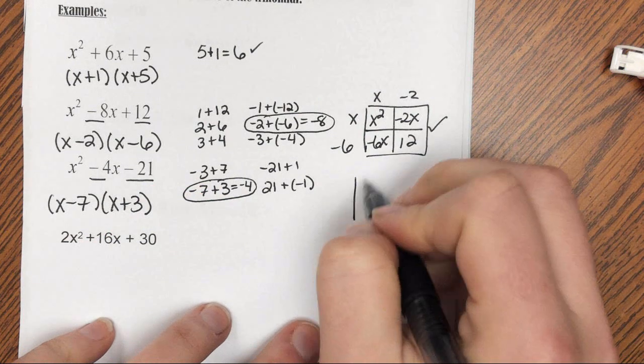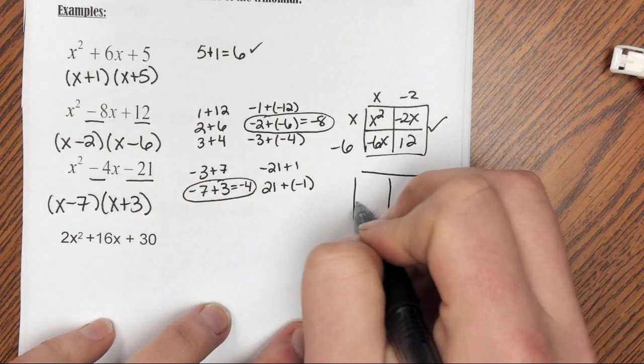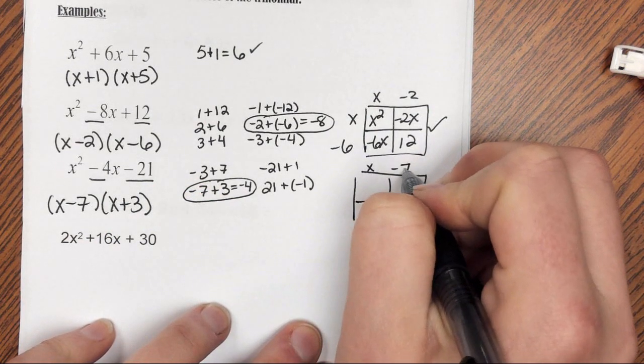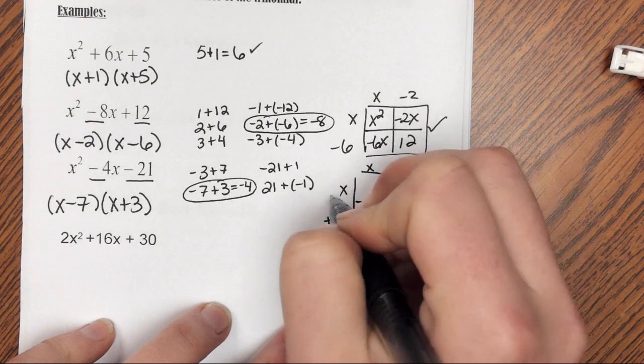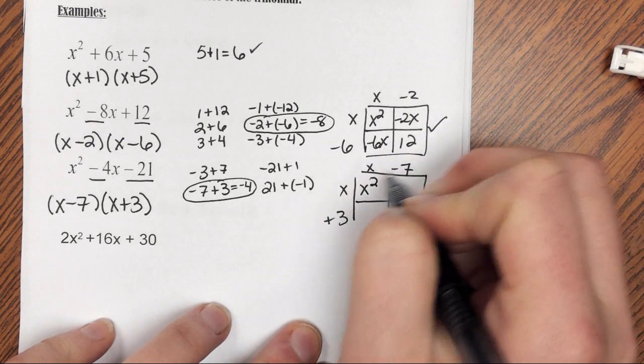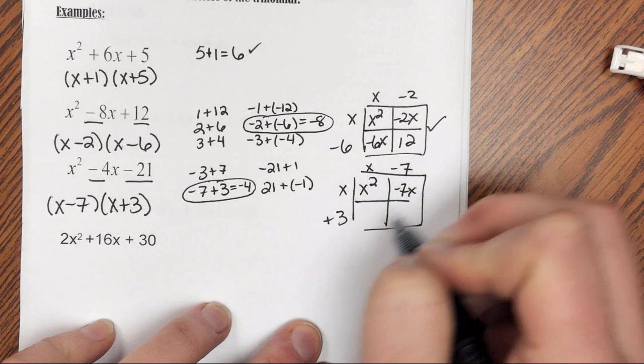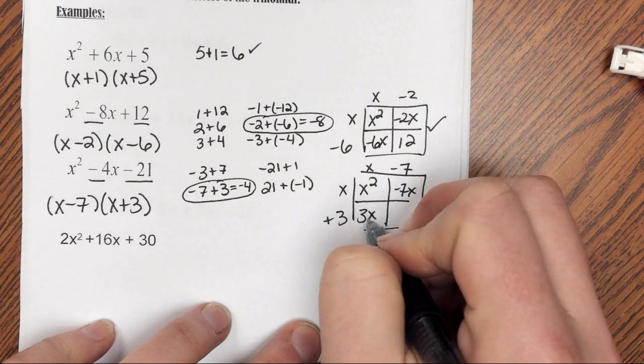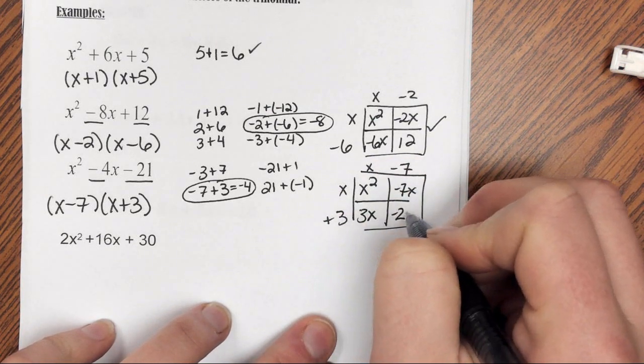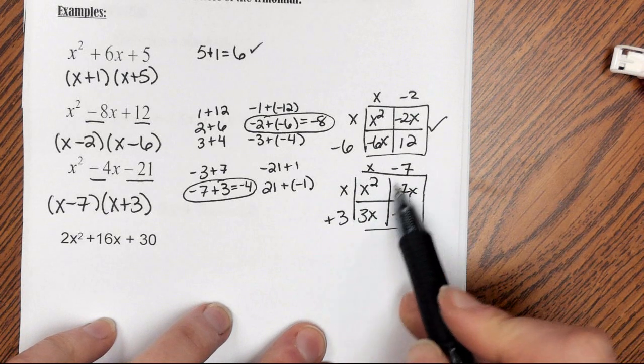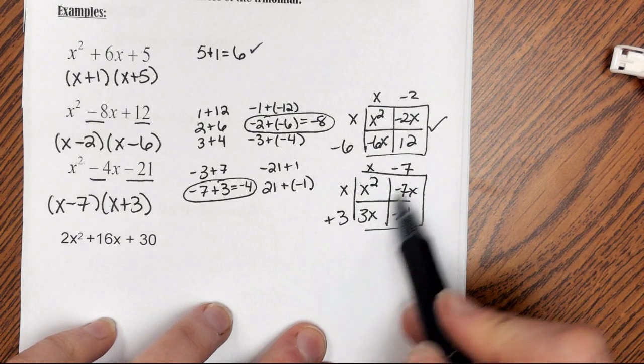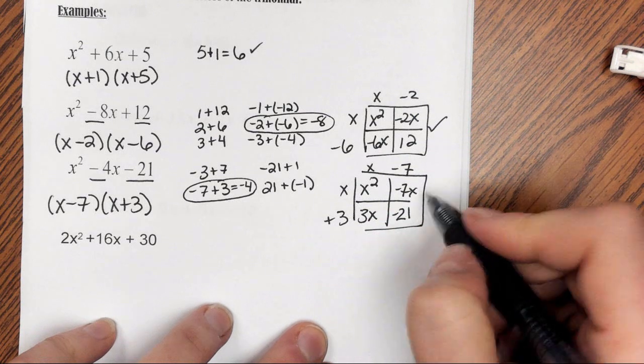Quick check. x minus 7, x plus 3, x times x is x squared, negative 7 times x is negative 7x, x times 3 is 3x, negative 7 times 3 is negative 21. x squared, negative 7x plus 3x is negative 4x, negative 21 checks out.